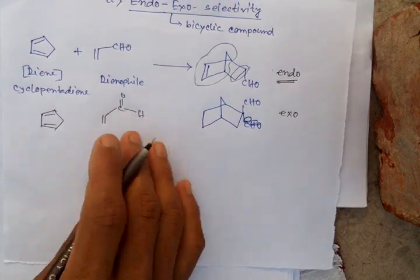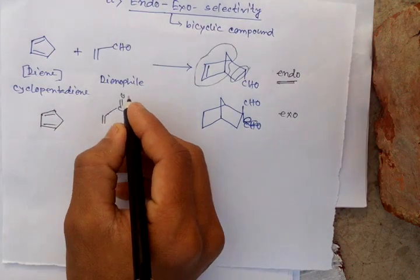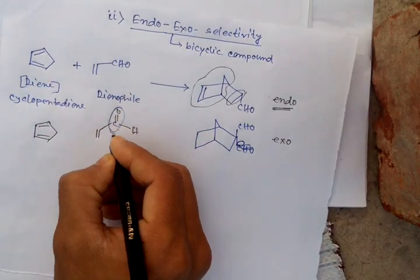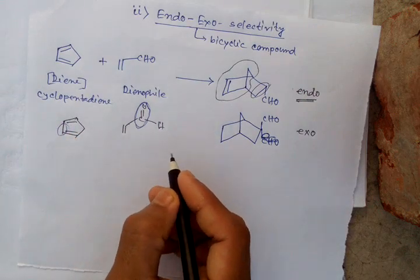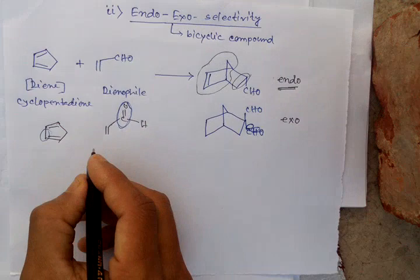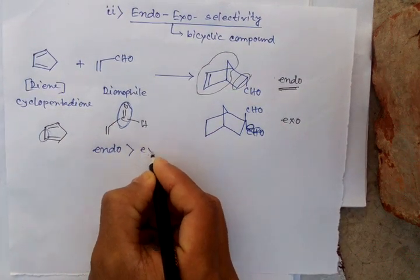Secondary orbital interaction. That is, there are some kinds of interaction between carbonyl orbital and this orbital. Because of that, endo product is more favored than exo product.